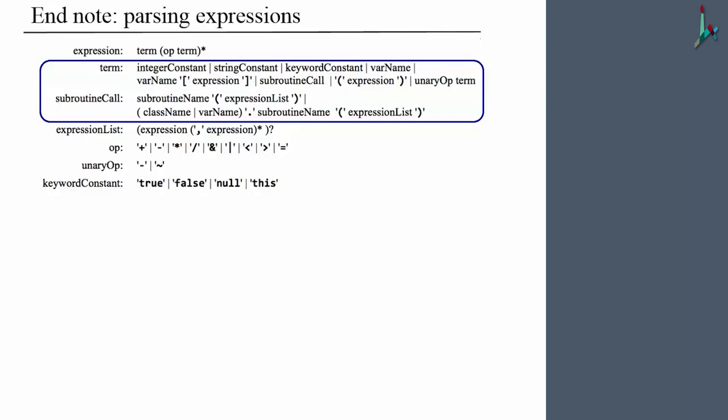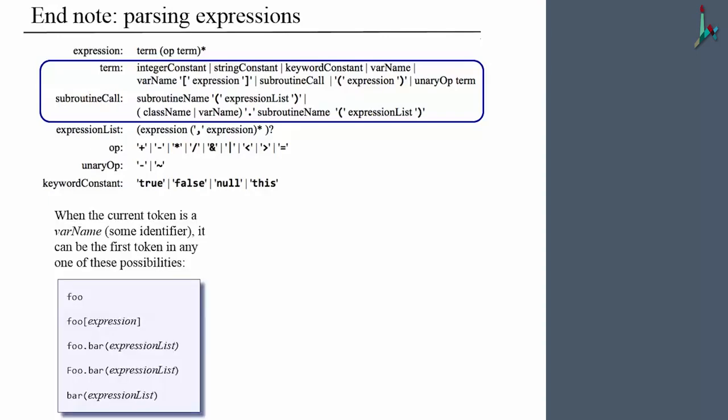if the current expression, I'm sorry, if the current token is a variable name, then it turns out that according to the rule here, we have several options. And each one of them should be handled separately. And here are some examples of what may sort of transpire when you have a token which is a variable name.